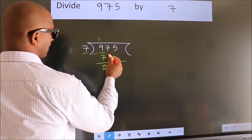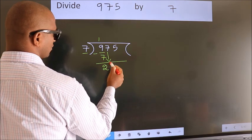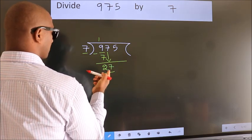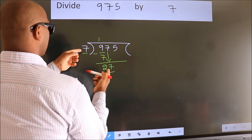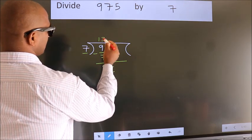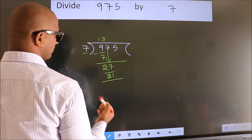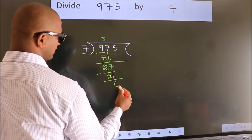After this, bring down the beside number. So 7 down. So 27. A number close to 27 in 7 table is 7 threes 21. Now we subtract. We get 6.